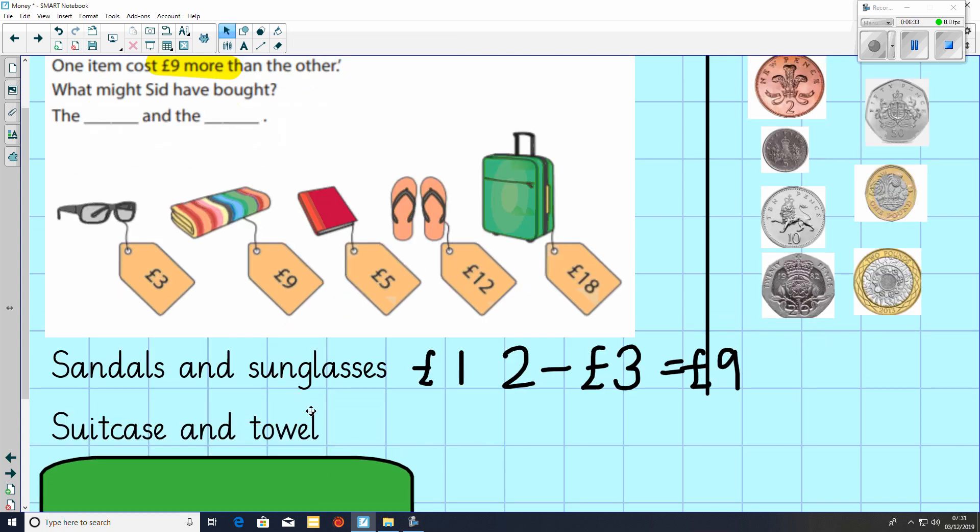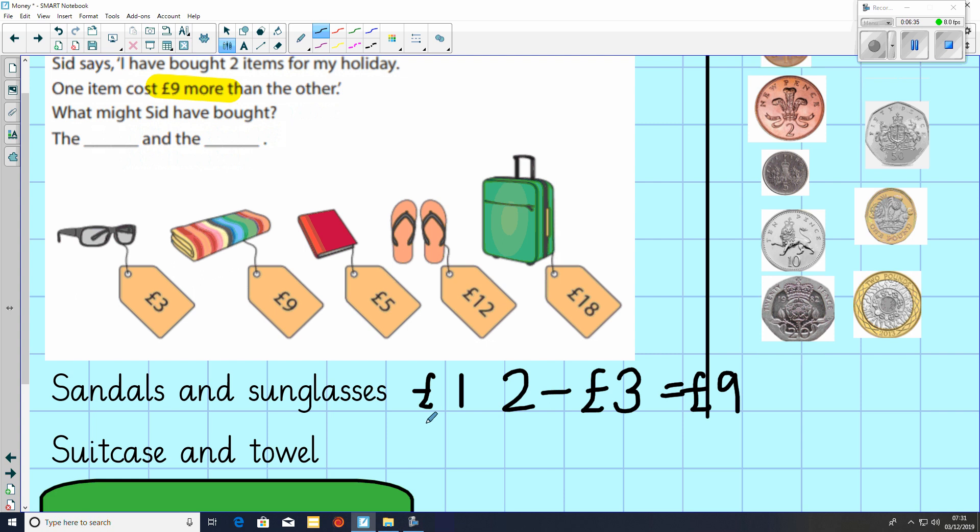He could have also bought the suitcase and the towel because the suitcase is £18 and the towel is £9. 18 subtract 9 equals 9.